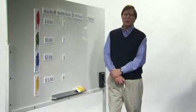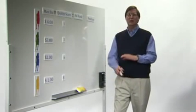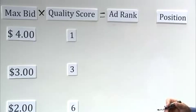So how does this quality score affect the way the auctions run? What we do is we have a concept of ad rank. An ad rank is going to be the bid of the advertiser times the quality of the ad.